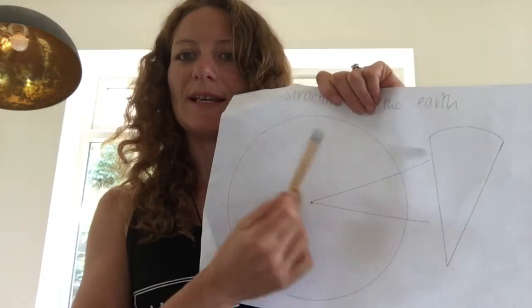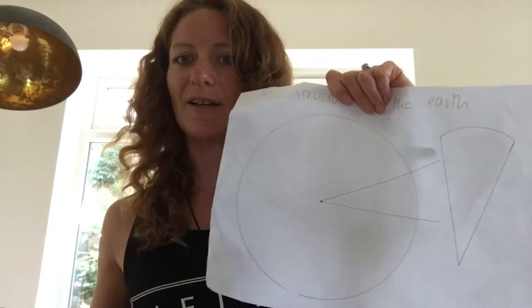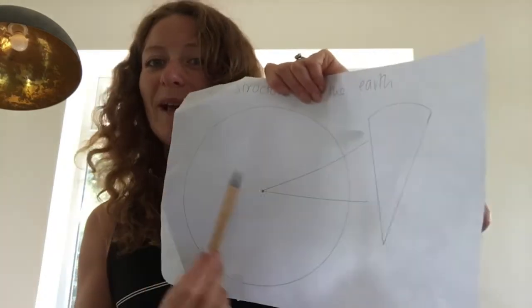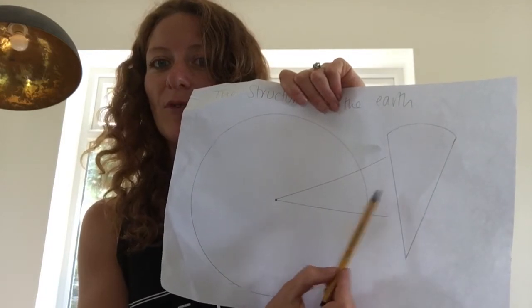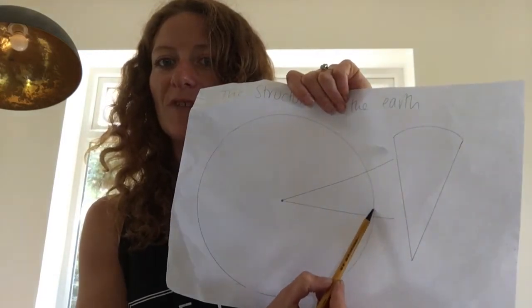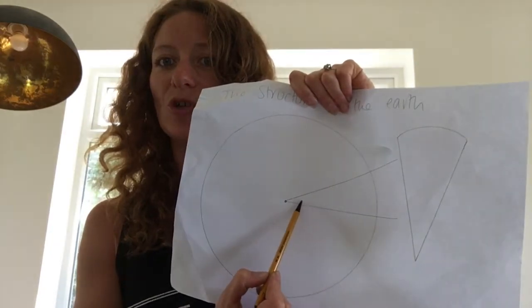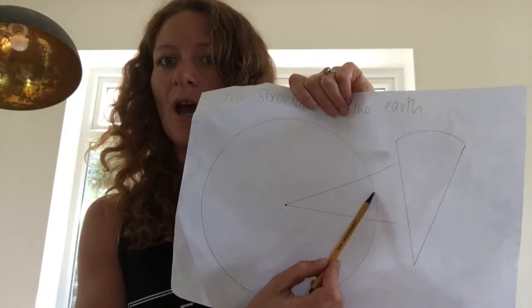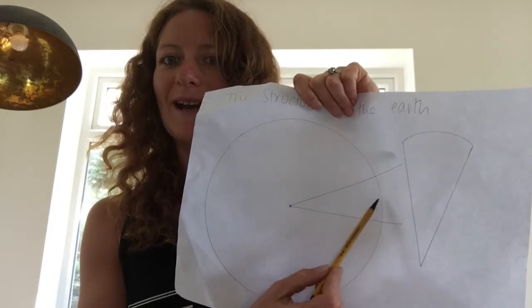What you've essentially got now is the Earth with a big slice cut out of it. In the rest of this session we're going to travel from the surface of the Earth where we live, right down into the middle, and find out what is happening on our way down there - and this all explains why we have earthquakes and volcanoes.